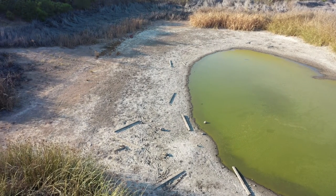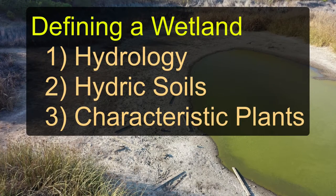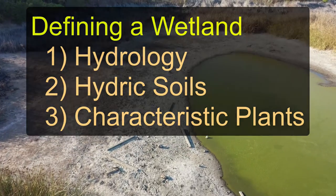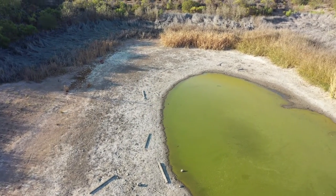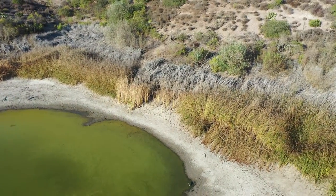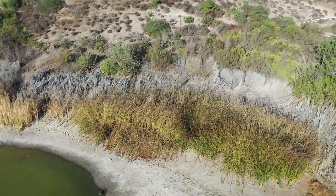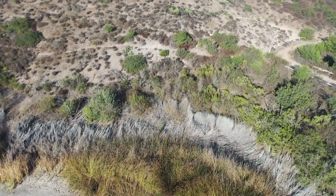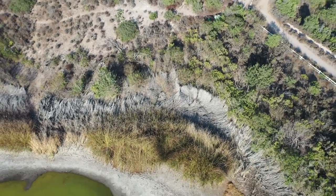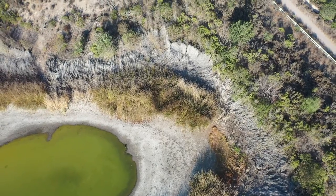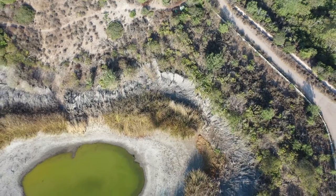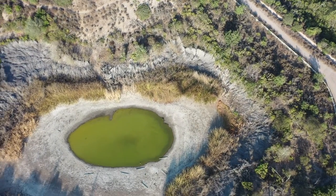The third and last part of our tripartite definition of what makes something a wetland is the vegetation. Looking beyond the water area, we have the non-inundated soil, then all this vegetation. Higher up we see more terrestrial vegetation, but really close to the edge — the perimeter of this pond — what we're seeing are things like cattails, typha (the genus Typha), and other reeds and sedges. These are wetland plants.